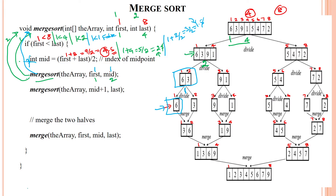We go back to the second recursive call. In the second recursive call, our middle element is 2. We have to apply the next statement: middle plus 1 is 2 plus 1 = 3, and the last index is 4. So we are applying a recursive call with 3 comma 4. This is actually the fourth recursive call.